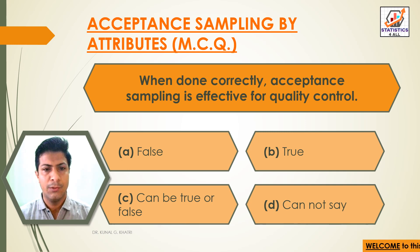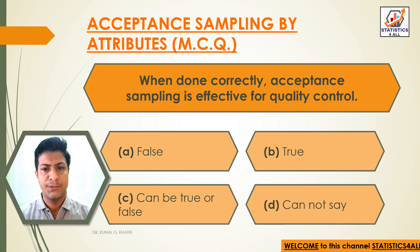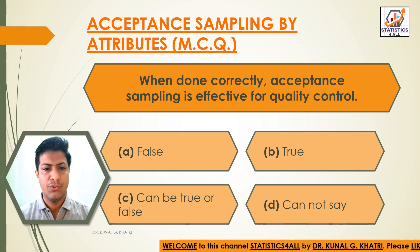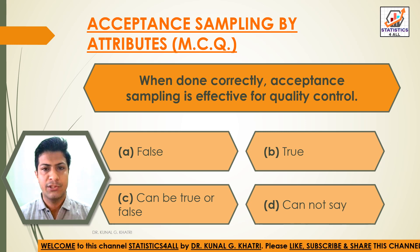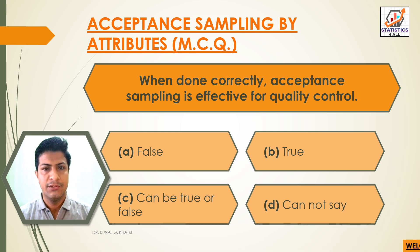Question 2: When done correctly, acceptance sampling is effective for quality control. Option A: False. Option B: True. Option C: Can be true or false. Option D: Cannot say. The answer is Option B — True. When done correctly, acceptance sampling is effective for quality control.